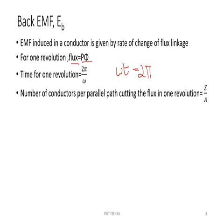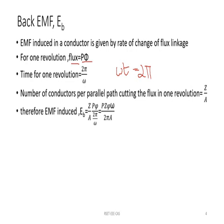The number of conductors per parallel path cutting the flux in one revolution is total number of conductors divided by parallel paths, that is Z by A. Therefore, EMF induced equals Z by A (conductors per parallel path) into total flux P phi, divided by time 2 pi by omega. In this expression, P phi by 2 pi A is constant and can be replaced with KT. So the expression becomes back EMF equal to KT into omega.